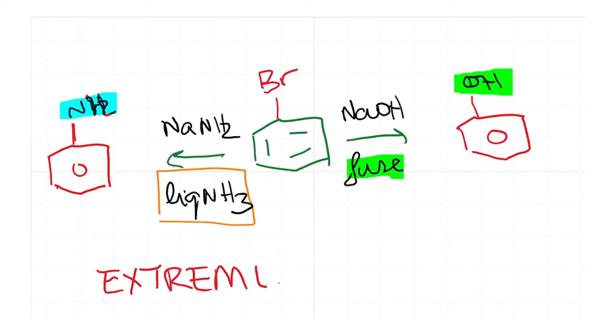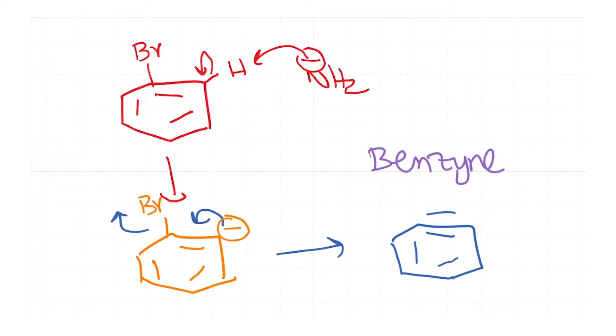And not only that, the reaction mechanism is also very interesting. So the proposed mechanism, the first step involves the reaction of NH2 minus picking up a proton and leaving behind a carbanion, and this carbanion can actually undergo a rearrangement in the following manner and produce the corresponding alkyne which is known as benzyne.